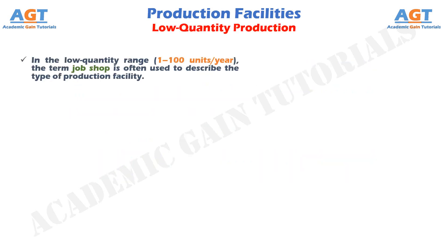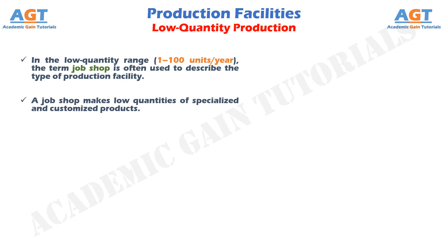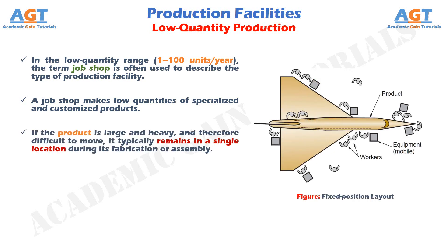Low quantity production falls in the range of 1 to 100 units per year. The term job shop is often used to describe this type of production facility. A job shop makes low quantities of specialized and customized products. The products are typically complex, such as space capsules, prototype aircraft, and special machinery. The equipment in a job shop is general purpose, and the labor force is highly skilled. A job shop must be designed for maximum flexibility to deal with wide product variations — hard product variety.